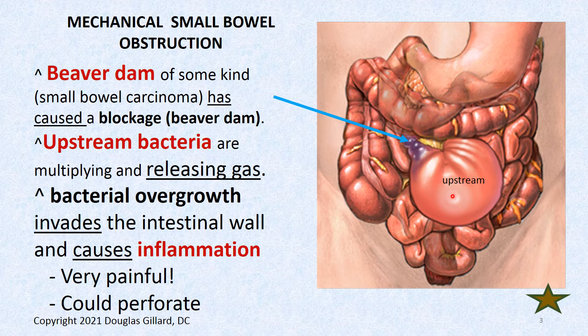No fecal material could get through, so it backed up here. Most of this is gas — the bacteria are having a party. Bacteria aren't designed to be in your gut forever; they move through with the fecal material. But if they get stopped and stuck, they breed and multiply and release all sorts of gas, and your belly swells up. That's a classic mechanical obstruction.